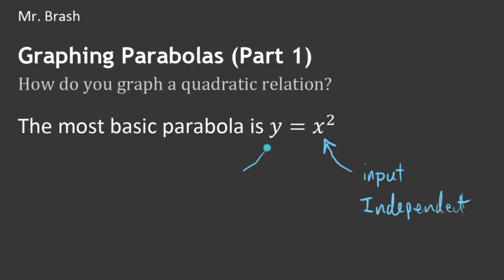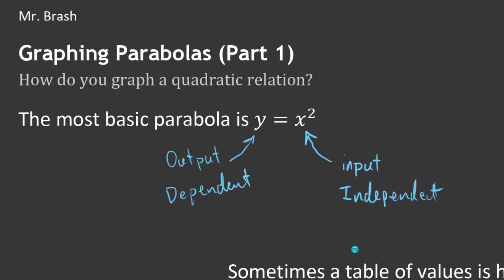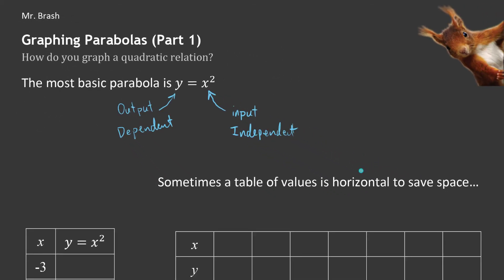Over here the y value — that's our output — that is dependent. The output depends on the input. You're going to need to know that for maybe some future math. We're going to do this from tables of values in this video, and then in other videos we're going to do it straight from the different equations that you can write.